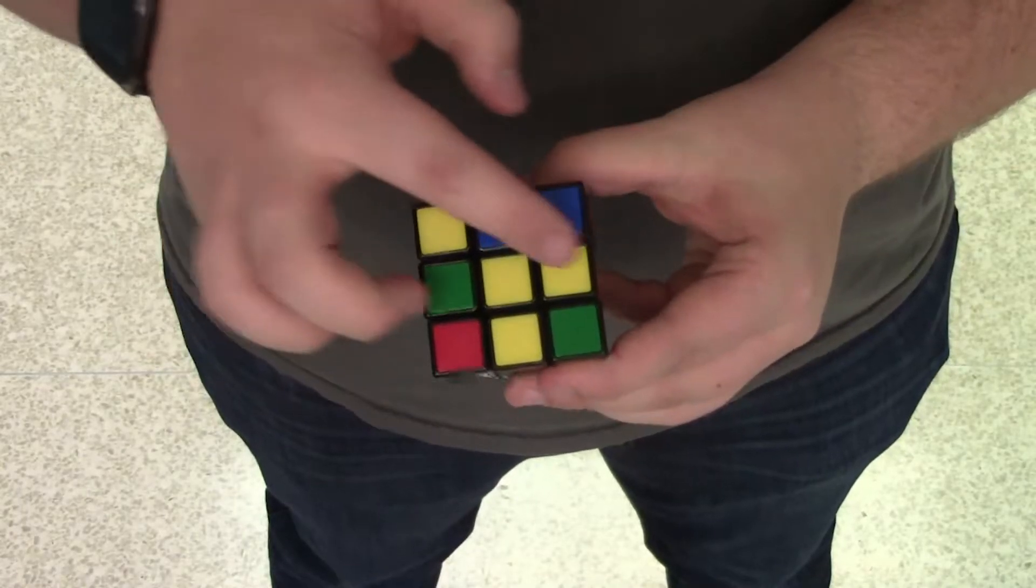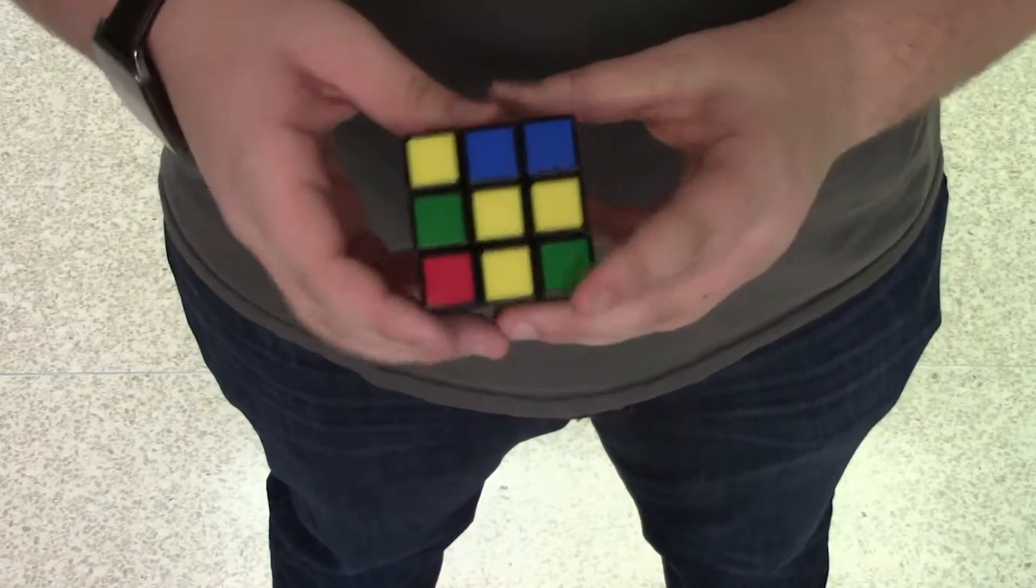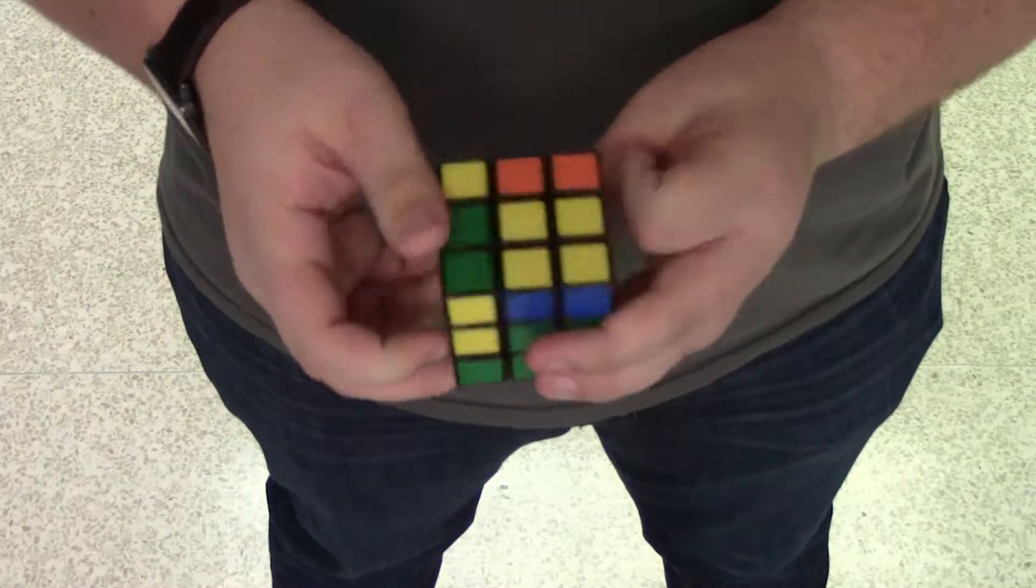Okay, so the fourth step in solving a Rubik's Cube is to solve the cross on the opposite side from where you solve the cross in the very beginning.